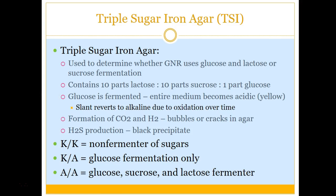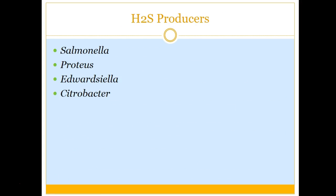The triple sugar iron TSI agar has three different sugars: lactose, sucrose, and glucose. If glucose is fermented, it turns yellow at the butt. If the entire tube is yellow, all three sugars were fermented. If only the bottom is yellow, only glucose was fermented. If the entire tube stays a reddish alkaline color, there was no sugar fermentation. Black precipitate throughout indicates H2S production.